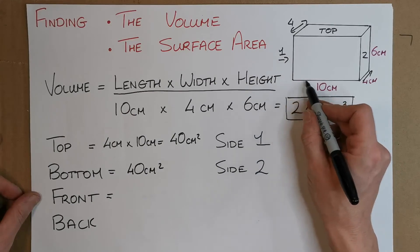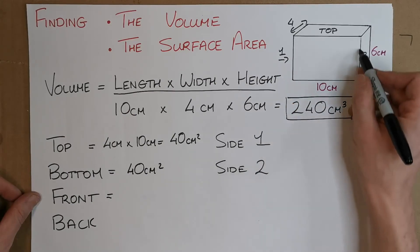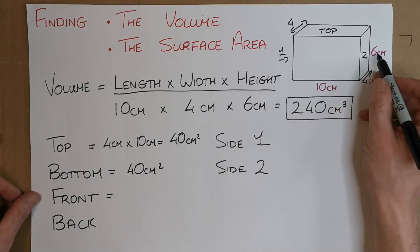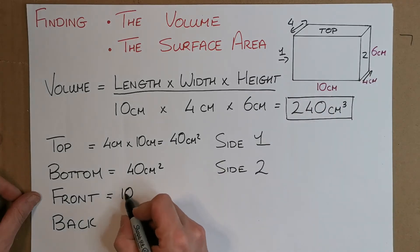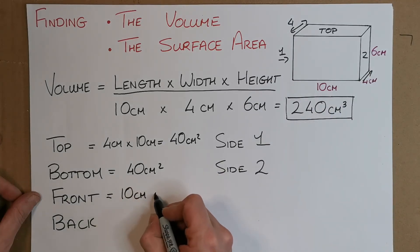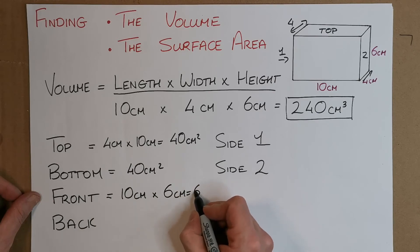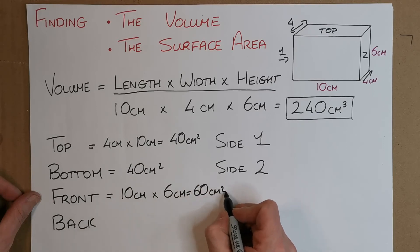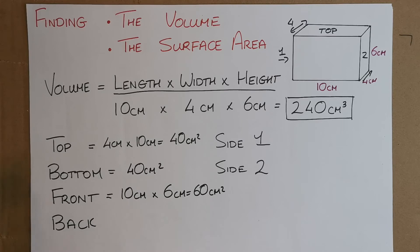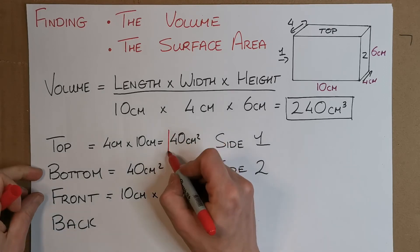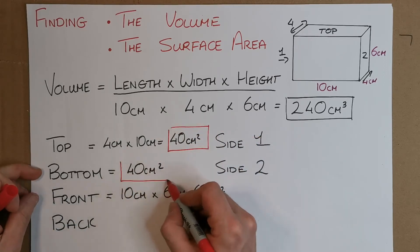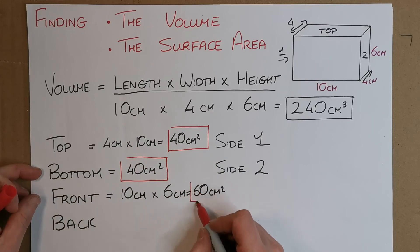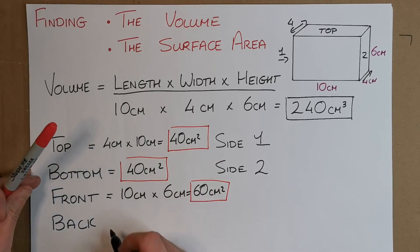So what's the front? Well, the length is 10, and the width, or the height in this case I suppose, is 6. So that's just a simple 10 centimeters by 6 centimeters, which gives me 60 centimeters squared. So let's put a box around all these ones. I have the top done, which is the same as the bottom. I have the front done, which is also going to be the same as the back.